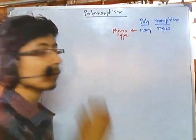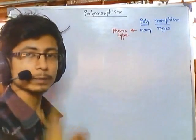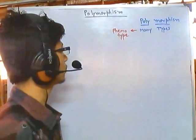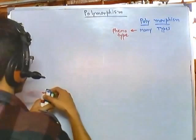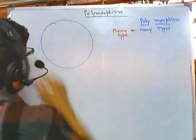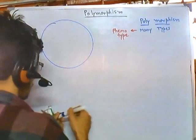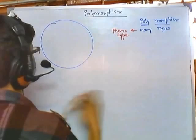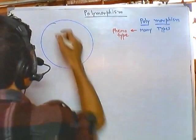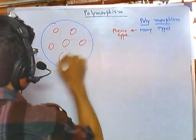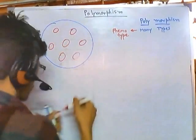Monomorph means one type of phenotypic expression in a population. So if I draw this scenario: inside a population we have many different individuals — let's say among them this is population A.